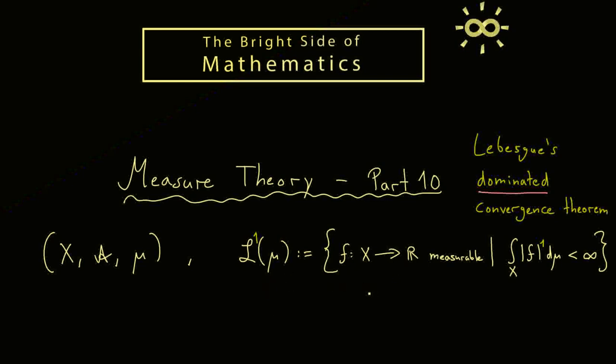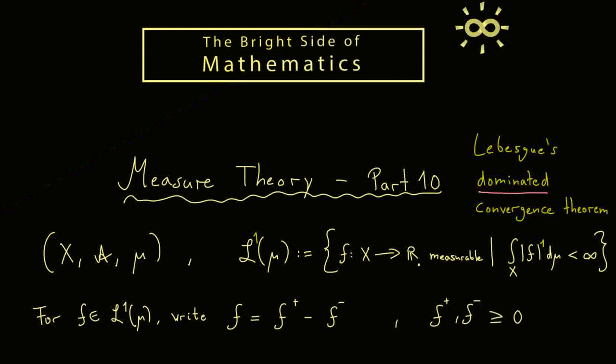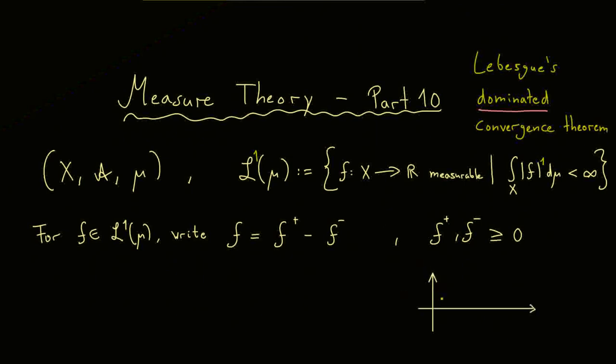For such functions, you can also define the integral just by looking at the positive and the negative part here separately. This means that for f in our L1 space, we write the function f as the combination of two non-negative functions. I call this first one f plus and the second one f minus. The combination is given by a minus sign, and the idea is f plus, f minus are non-negative. Maybe a short picture for this. If this is the graph of the function f, then this part here is the graph of our function f plus.